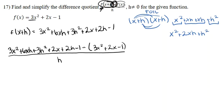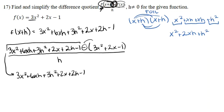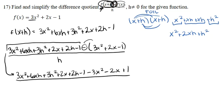Now we distribute the minus sign across the parentheses. The f of x plus h portion stays as is in the numerator. Negative 1 times 3x squared gives negative 3x squared; negative times positive 2x gives negative 2x; and negative 1 times negative 1 gives positive 1. This is all divided by h.